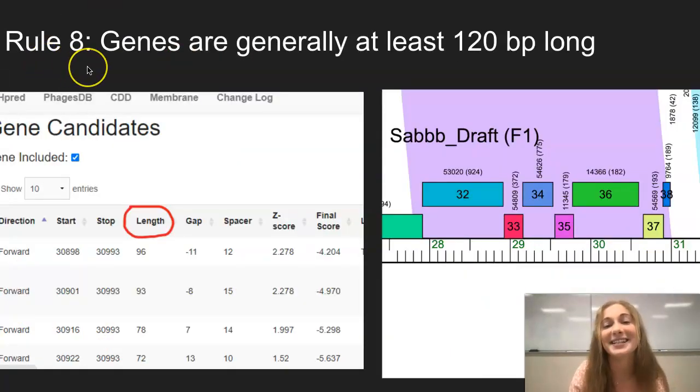Rule 8 tells us that genes are generally about 120 base pairs or longer. On pecan, we can find the length of each gene in this column right here. As you can see, all of these options are below the average length of 120 base pairs long, which means that we should be considering deleting it.